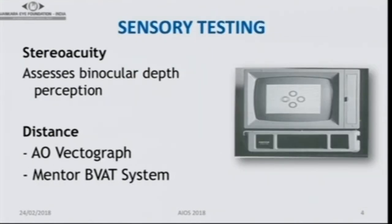Most tests in squint must be done for distance and near, with or after correction of refractive error. For distance stereoacuity testing we have the AO Vectograph and Mentor BVAT system, though these are not available in local use. We also have the Frisby-Davis system for measuring distance stereoacuity. For near, the Titmus fly test is convenient but patients can guess; the TNO test is preferable as there are no monocular clues.